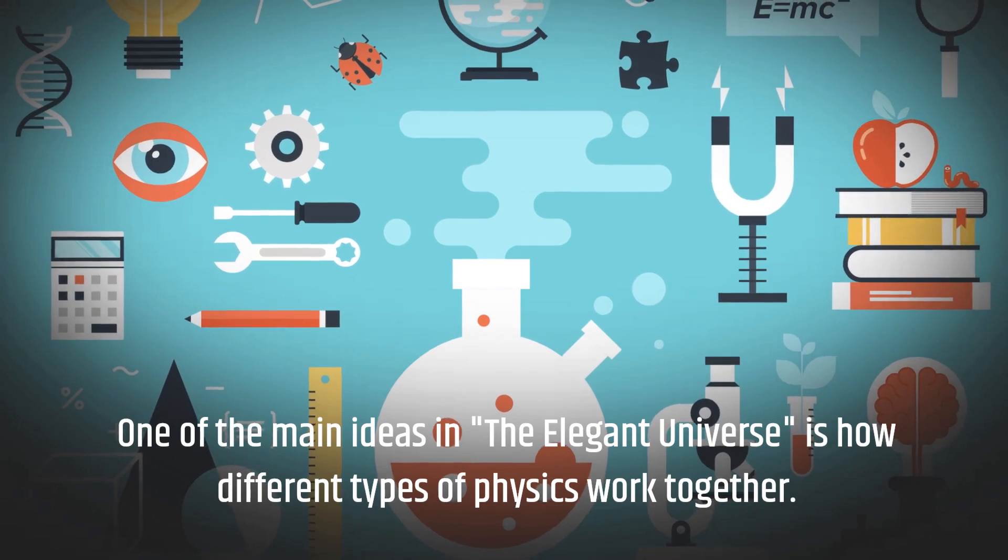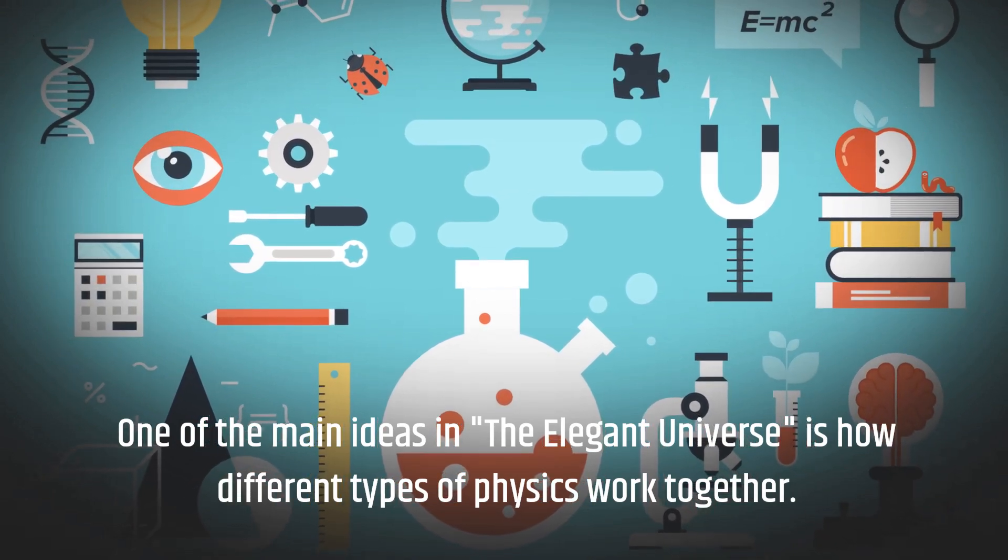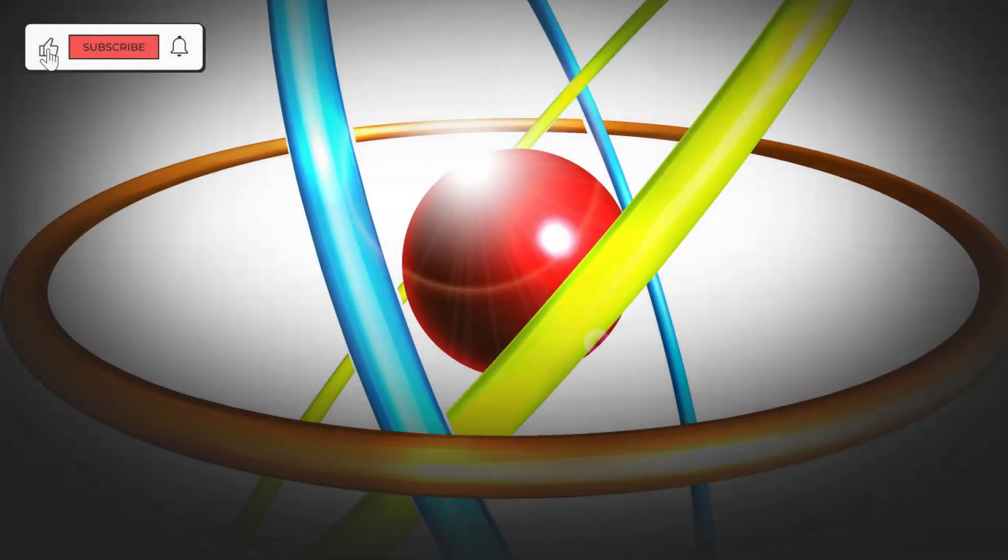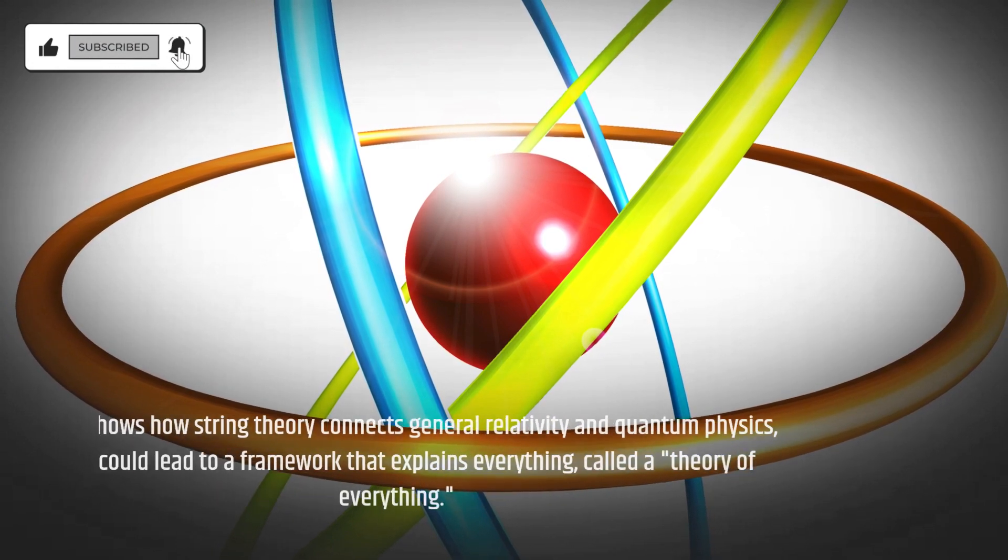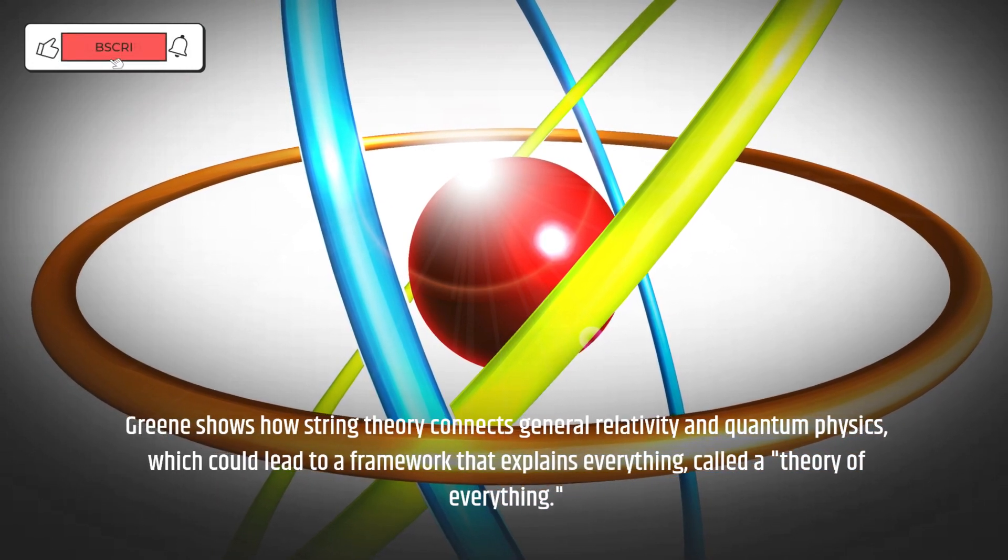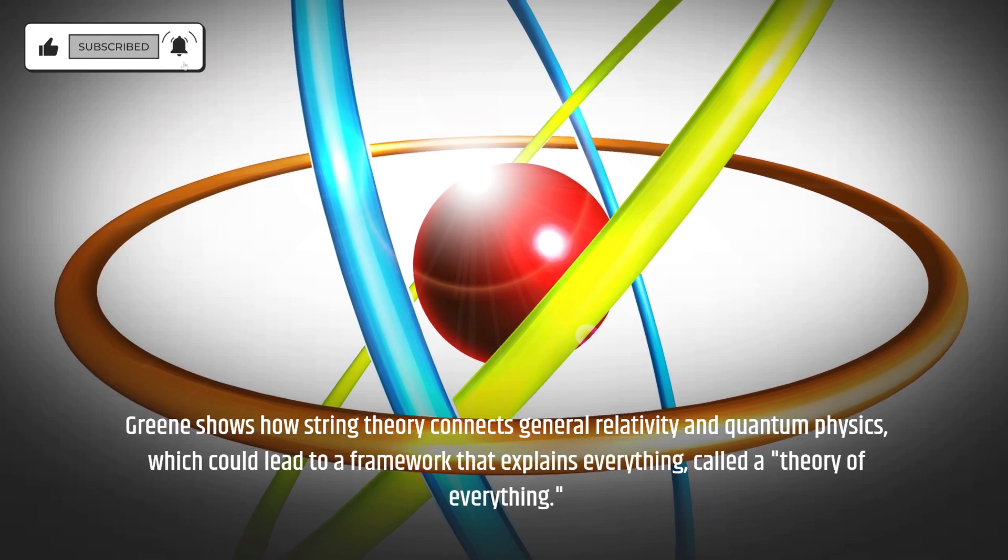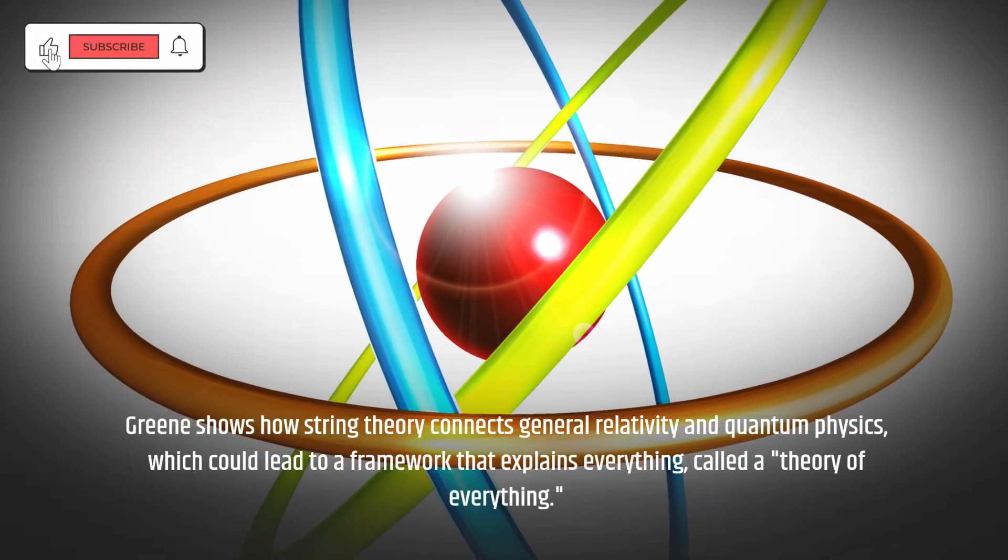One of the main ideas in The Elegant Universe is how different types of physics work together. Greene shows how string theory connects general relativity and quantum physics, which could lead to a framework that explains everything, called the theory of everything.